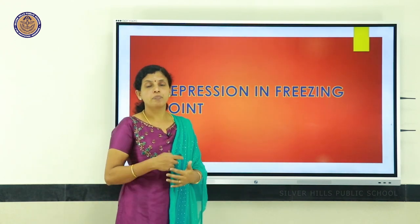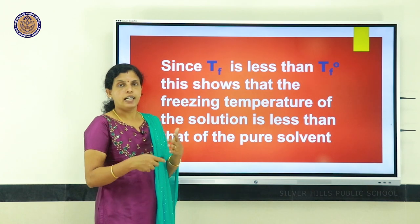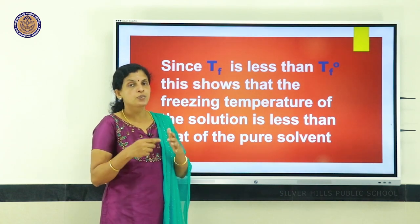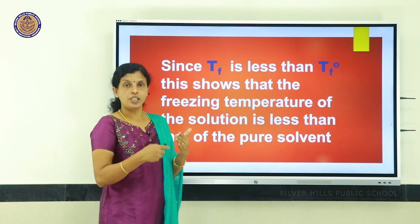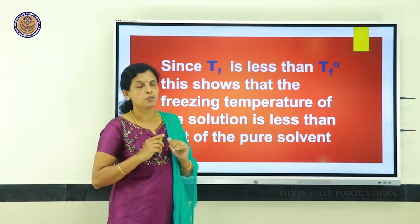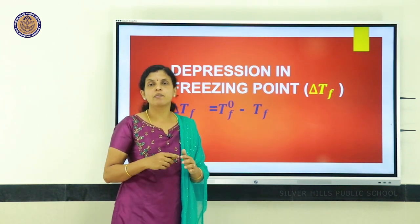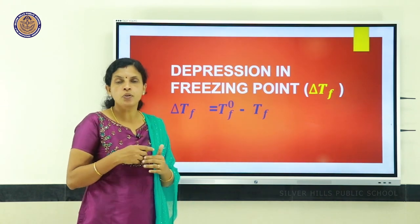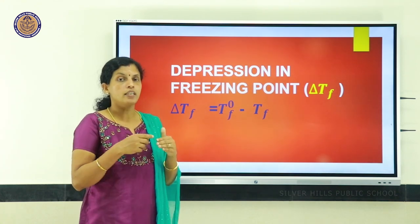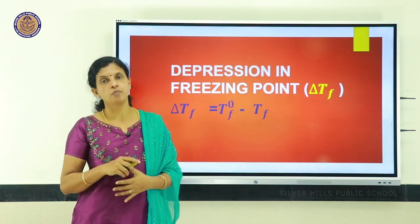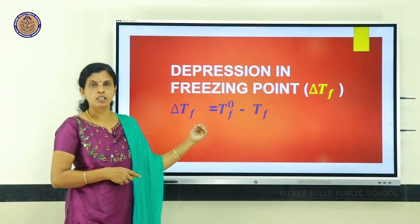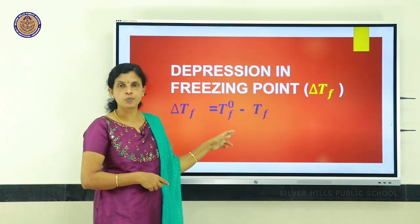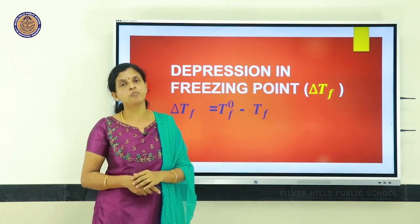What is meant by depression in freezing point? By adding a non-volatile solute, the freezing point of the solution decreases — Tf⁰ is greater than Tf. This phenomenon is called depression in freezing point, and it is calculated by the equation: ΔTf = Tf⁰ − Tf, where Tf⁰ is the freezing point of pure solvent and Tf is the freezing point of solution.